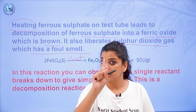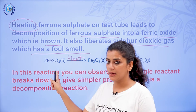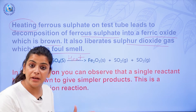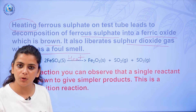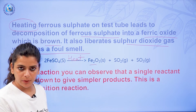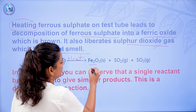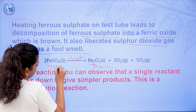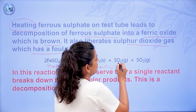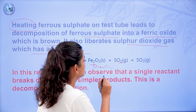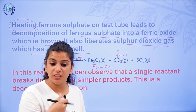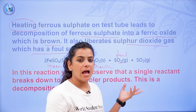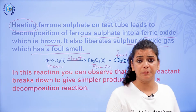Ferrous sulfate was a single reactant, and when you heat it, it decomposed and broke down into various compounds. It formed ferric oxide, which is brown in color, while ferrous sulfate was green. In addition, sulfur dioxide was released which has a foul smell — you can feel the foul smell when you burn it. SO3, sulfur trioxide, was also released. So FeSO4, which was green in color, decomposed into multiple products.